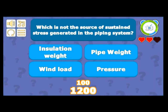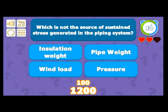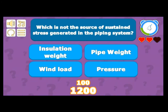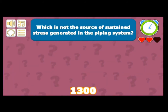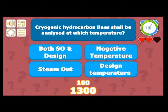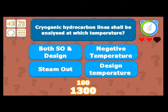Which is not a source of sustained stress generated in a piping system? Insulation — no. Wind load — no, that's an occasional loading. So wind load is the answer, because pressure is a sustained load.